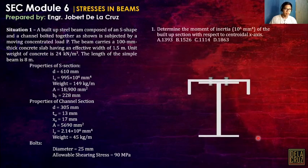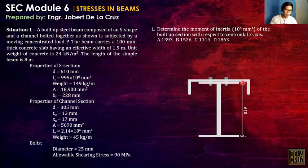Determine the moment of inertia in mm⁴ of the built-up section with respect to the centroidal X-axis. When we say X-axis, that is the strong axis. So let us define first: for the S-shape, the depth D is measured from outer to outer — that is the total depth of the S-shape. The beam flange is 2 to 8 millimeters on each side since it is an S-shape, so it is equal on top and bottom.